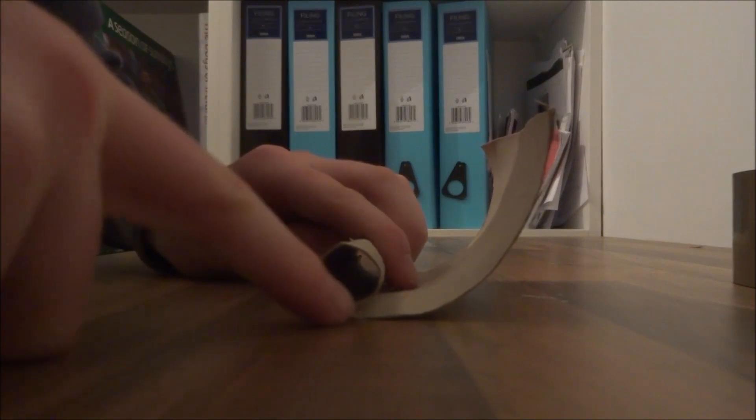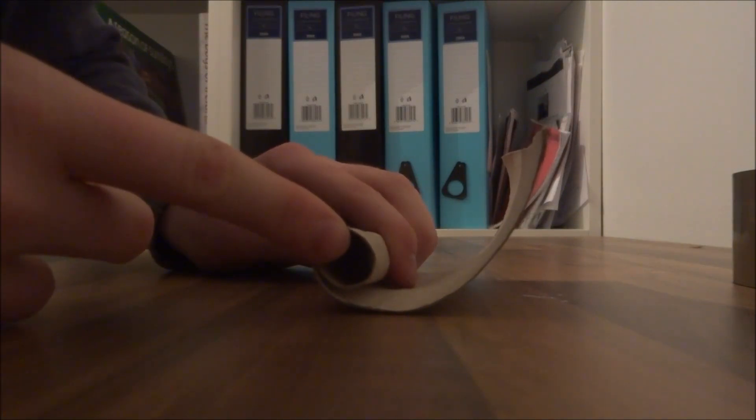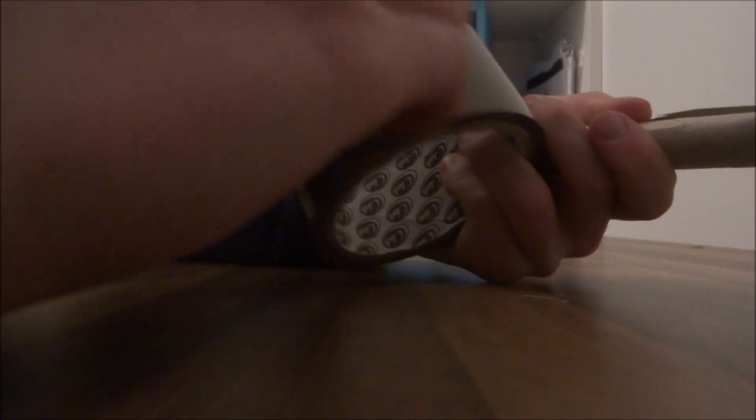So you're going to start off by rolling up the cardboard to about maybe a centimeter and a quarter roughly in diameter. Get your tape and just wrap it around.